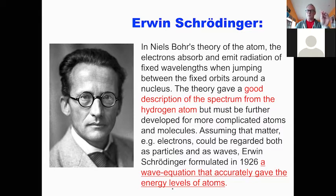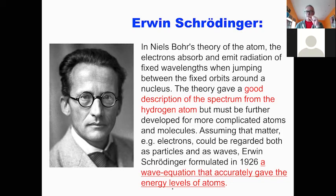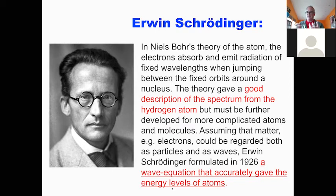Schrödinger said: if you treat electrons as waves, there are different equations we can use. Particles act in a very specific way — they're here, or here, or here, very defined. But waves don't have that; we can't predict exactly where they're going to be at any one time. So he used a wave equation rather than a particle equation.